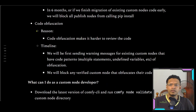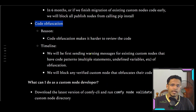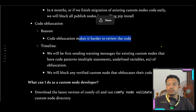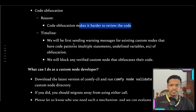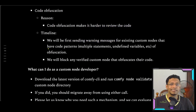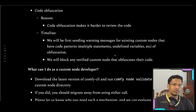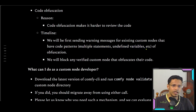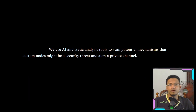The next topic they mentioned is about code obfuscation, noting it's harder to review. Their measures for this would be sending warnings for code patterns such as multiple statements and undefined variables, and they will be blocking custom nodes that obfuscate their code.